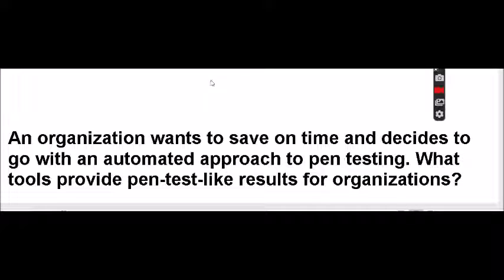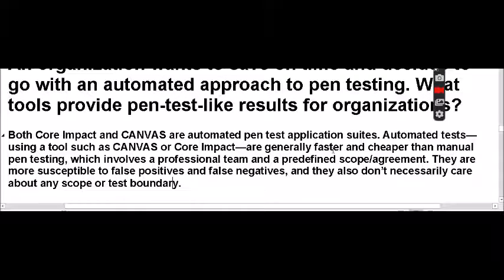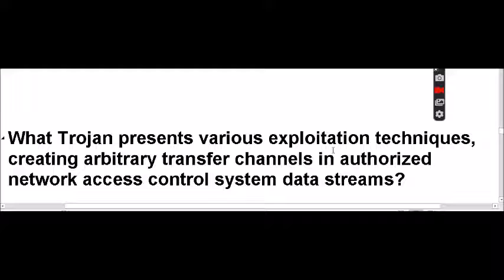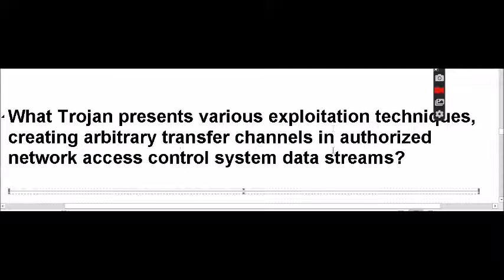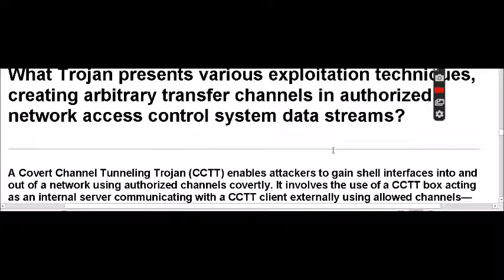An organization wants to save time and decides to go with an automated approach to pen testing. What tools provide pen testing results for organizations? Both Core Impact and Canvas are automated pen test application suites. What Trojan presents various exploitation techniques, creating arbitrary transfer channels and unauthorized network access control system data streams? A covert channel tunneling Trojan, or CCT, enables attackers to gain shell interfaces into and out of a network utilizing authorized channels covertly.